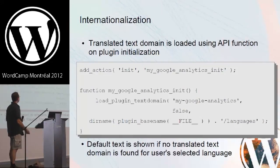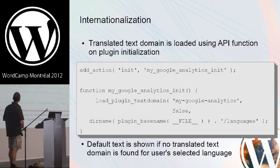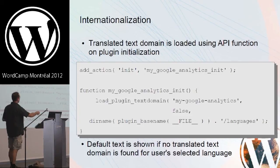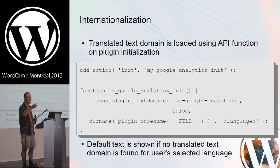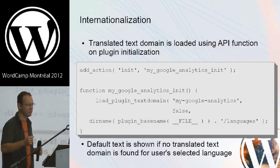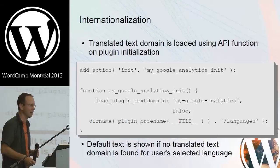The last step towards translation is loading the translation dictionary so WordPress knows to look up these translation strings. Under the init hook, you register your own function, and then call load_plugin_textdomain with the name of your domain and a path that resolves to your plugin's directory under its languages folder. WordPress will look there for a file matching the language of the installation the user is currently running. If there is no translation, the default text is shown.